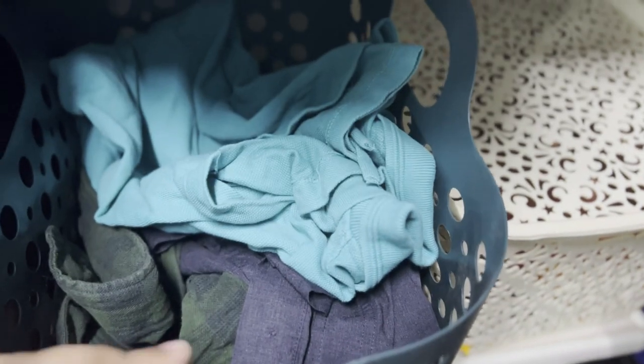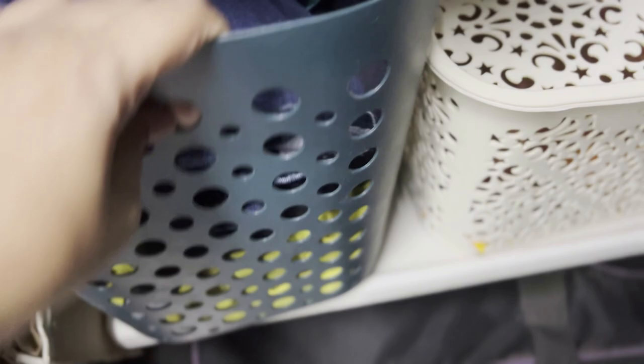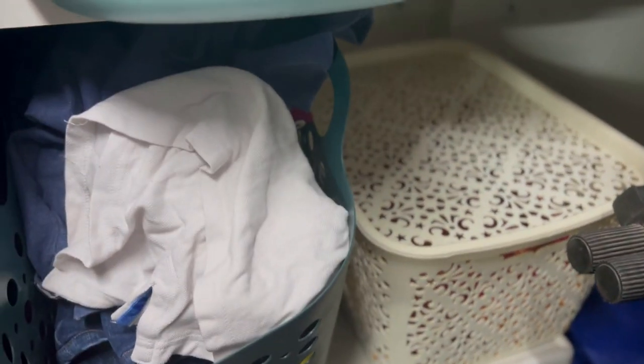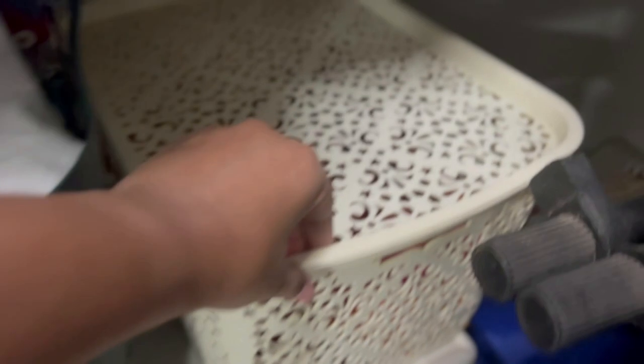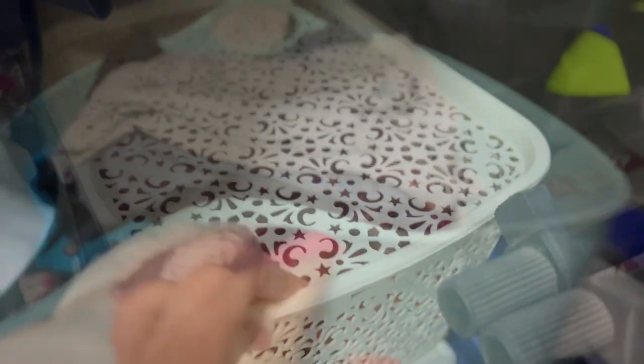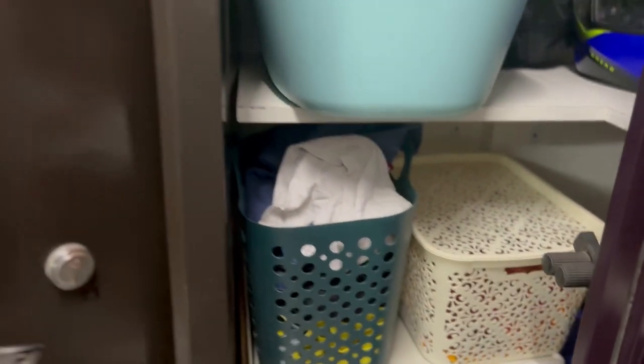I have also allocated two separate baskets. This blue basket from IKEA is used to store clothes that I need to send for ironing. And the white basket is used to store dry cleaning clothes. I have created a laundry system based on my convenience. You should do the same.